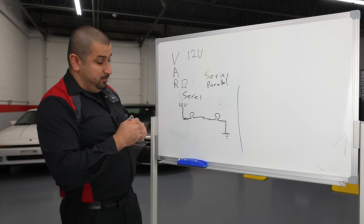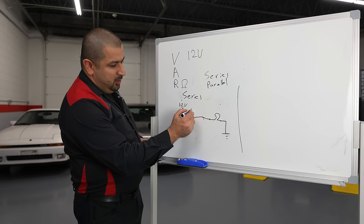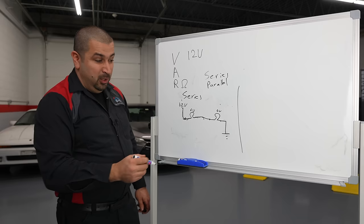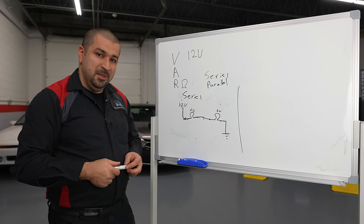12 volts. Let's say these are equal loads. So they're the same type of bulb. We're going to drop six volts here. We still have six volts in this wire. And we're going to drop the second six volts. And then we have nothing here. This is how a series circuit work.